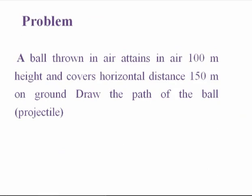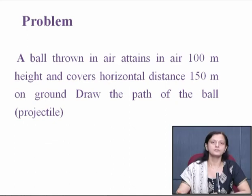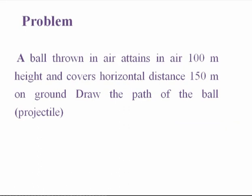Here is an example: a ball is thrown in the air, it attains 100 meters height and covers a horizontal distance of 150 meters on the ground. When anything is thrown into the sky against gravity and returns to the ground, it always follows a parabolic path. So sometimes students may be asked to draw the parabolic path of a ball or a stone. When it is in the sky and returning to the ground it always follows the parabolic path. We will construct the parabola here by the rectangle method.